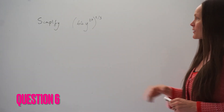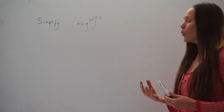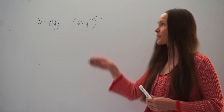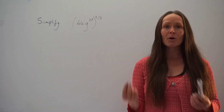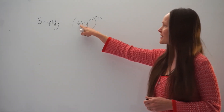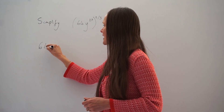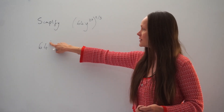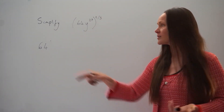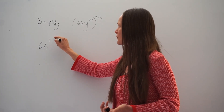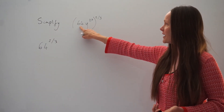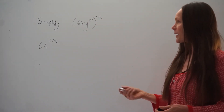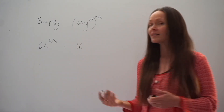In this question, we have to simplify 64y to the power of 27, all raised to the power of 2 thirds. When you have brackets with the power outside, the rule is that you multiply the powers together. Starting with the number 64: remember, 64 is the same as 64 to the power of 1, so when you multiply 1 by 2 thirds you get 2 thirds. We're just working out 64 raised to the power of 2 thirds. On a calculator paper, you can pop that into your calculator and you'll find the answer is 16.